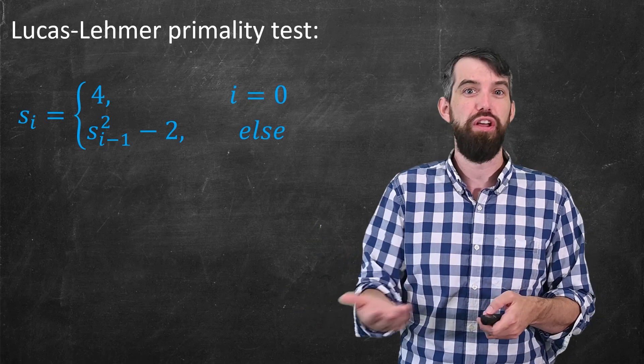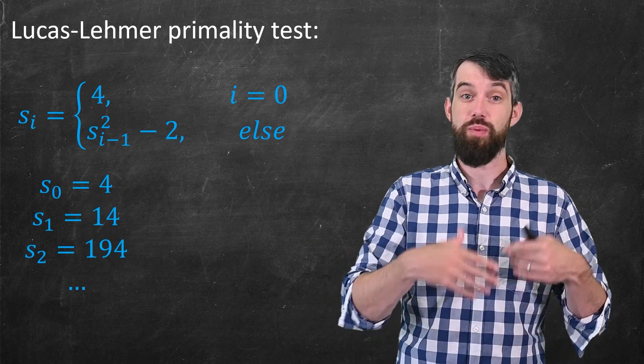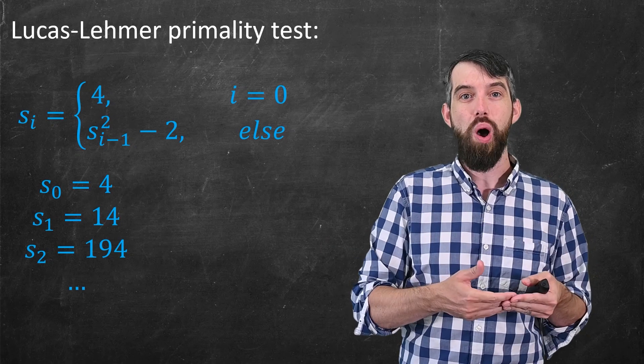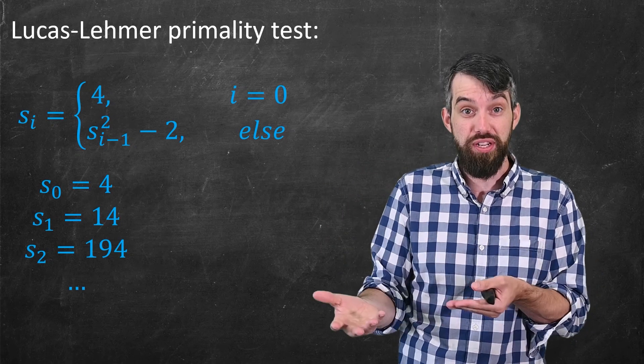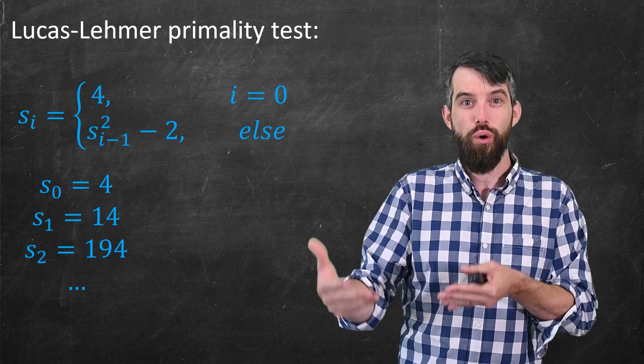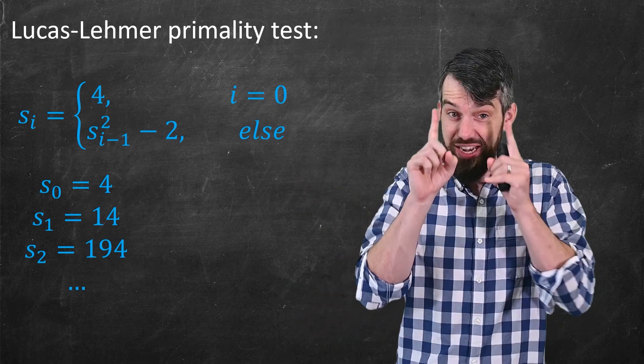For example, the first few terms of this sequence is, well, s_0 is 4, but then s_1 is going to be 4 squared, which is 16 minus 2, which is 14. s_2 is 194, and so on. Okay, so then here's the test.